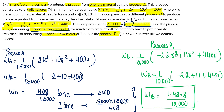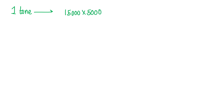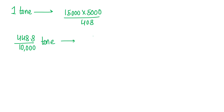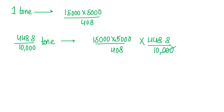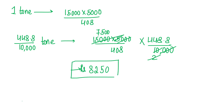We get the waste in process B as 448.8/10000 tons. To find the treatment cost for this amount, we use the rate established earlier: one ton of waste costs ₹5000 × 15000/408. Multiplying by 448.8/10000, some terms cancel out giving a factor of 2 and 7500, and when we calculate this we get ₹8,250. This is the amount the company has to pay for waste treatment when using process B.